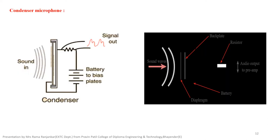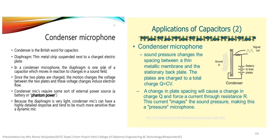Condenser microphone: it is a capacitor, where the diaphragm acts as a metal strip suspended next to a charged top plate. The diaphragm is one side of the capacitor which moves in reaction to changes in sound pressure. Since the two plates are charged, the motion changes the voltage between them and this voltage change induces electron flow. Condenser mics require some sort of external power supply or battery, and because the diaphragm is very light, they can have high frequency response and tend to be much more sensitive than dynamic microphones.